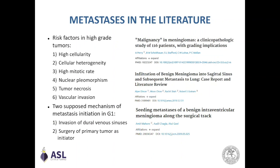Some predictors for the development of metastasis have been found in high-grade tumors: high cellularity, cellular heterogeneity, high mitotic rate, nuclear pleomorphism, tumor necrosis, and vascular invasion. These don't apply to low-grade meningiomas. Two supposed mechanisms of metastatic initiation in grade 1 meningiomas have been proposed: surgical seeding along surgical margins, and direct invasion of dural venous sinuses. This second mechanism may be the one in our patient, as he had a meningioma located very near the sagittal sinus.